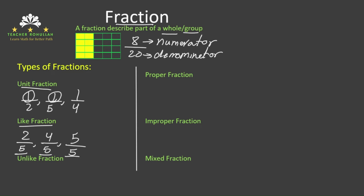The third type of fraction is unlike fraction. Unlike fraction is a fraction in which the denominators are not the same. For example, if you have the fractions 2 sixths, 3 fourths, and 5 eighths, these are called unlike fractions because the denominators are not the same number.